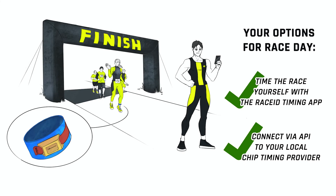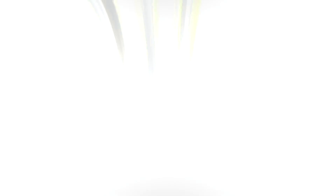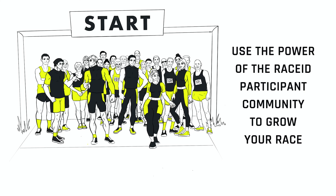On race day, use the Race ID timing app yourself or simply connect Race ID to your local RFID timing provider. Let spectators follow the race live online and publish final results instantly. Use smart tools to quickly set up your registrations for next year and invite your racers back to grow your start list with the help of the Race ID community.